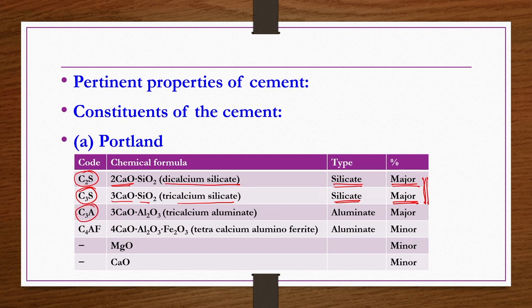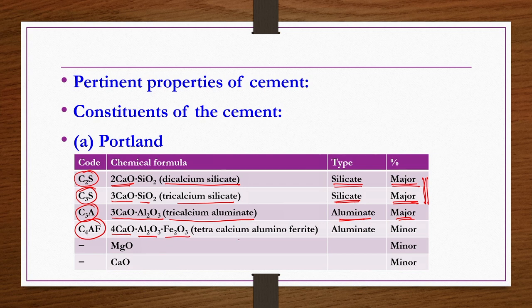C3A, where C stands for calcium oxide and A stands for alumina, is 3CaO·Al₂O₃ — tricalcium aluminate. It is an aluminate type and also present in major quantities. C4AF, where C is calcium oxide, A is alumina, and F is iron oxides, is 4CaO·Al₂O₃·Fe₂O₃ — tetracalcium alumino ferrite. It is an aluminate type and its contribution is minor. Sometimes magnesium oxide and calcium oxides individually are also present in minor quantities.